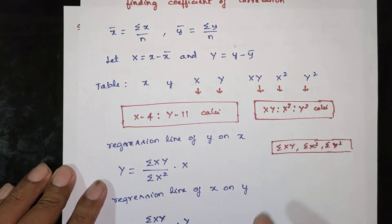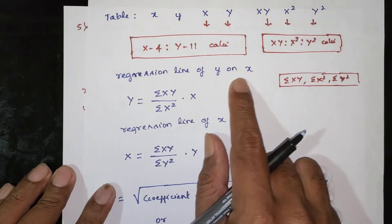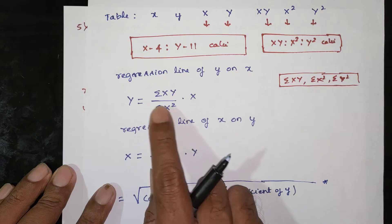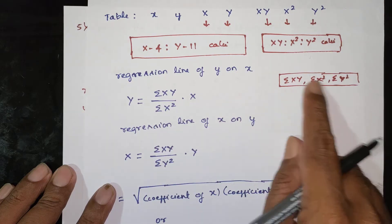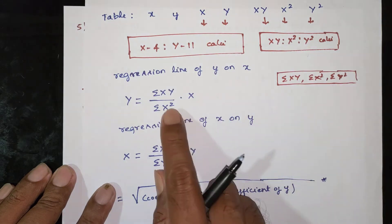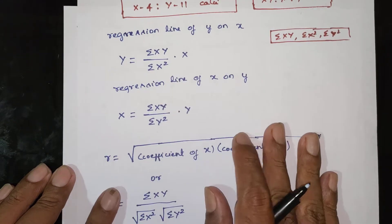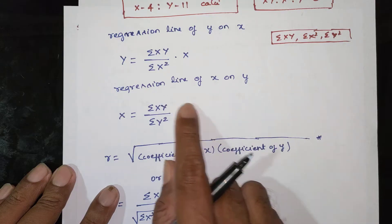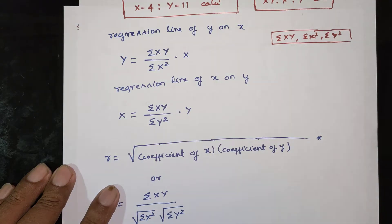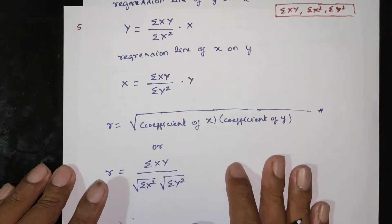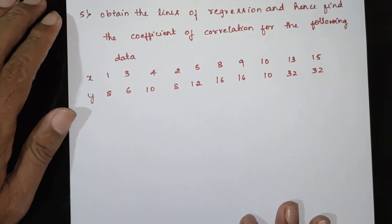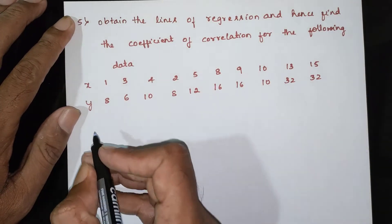Then find the regression line of y on x using the formula. Substitute the summation values into it. Then find the regression line of x on y using its formula. Substitute and simplify. Then find r, the coefficient of correlation.